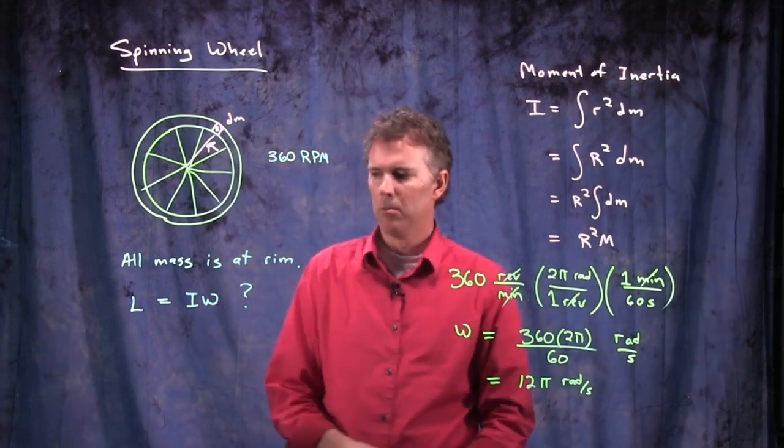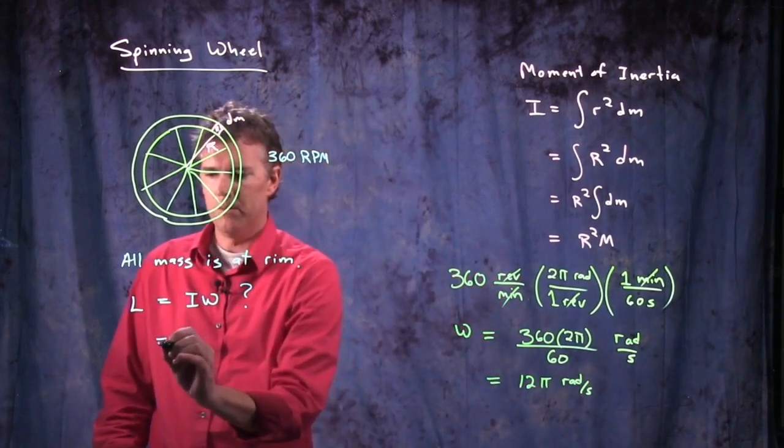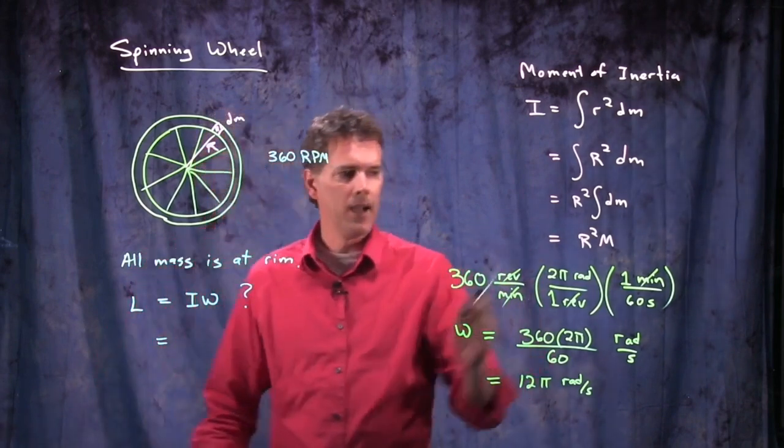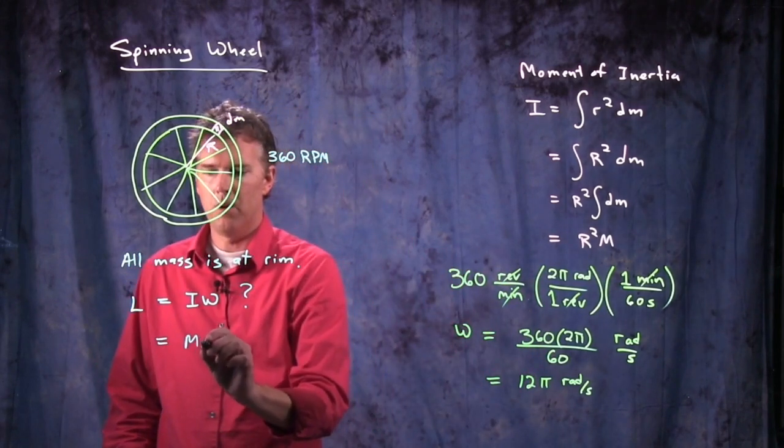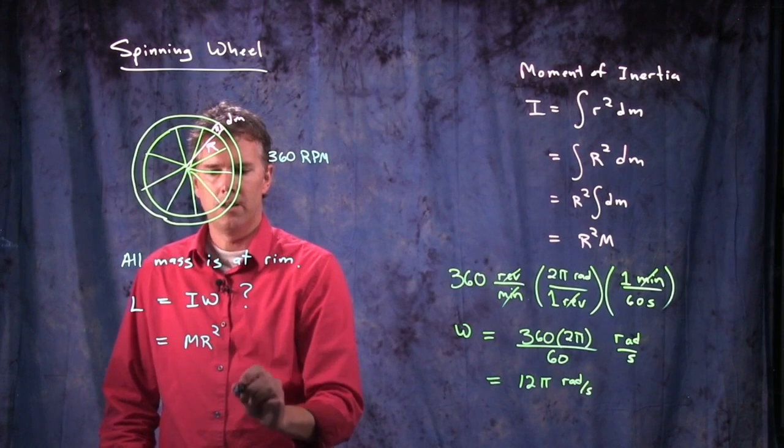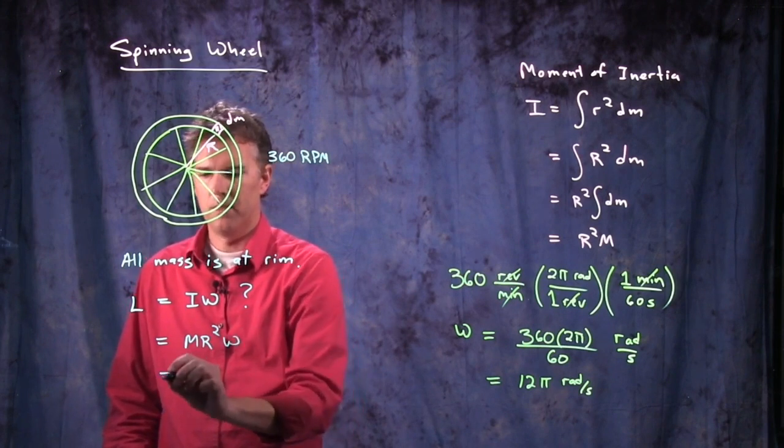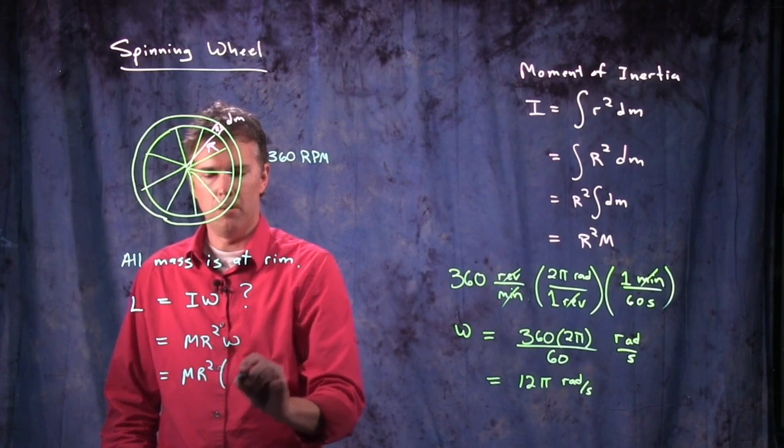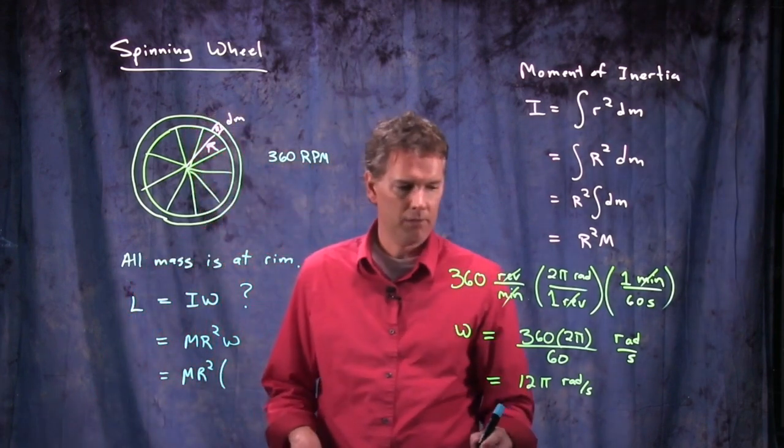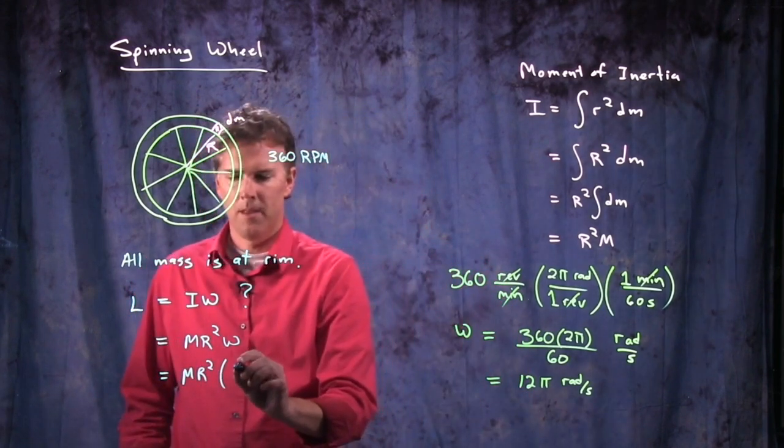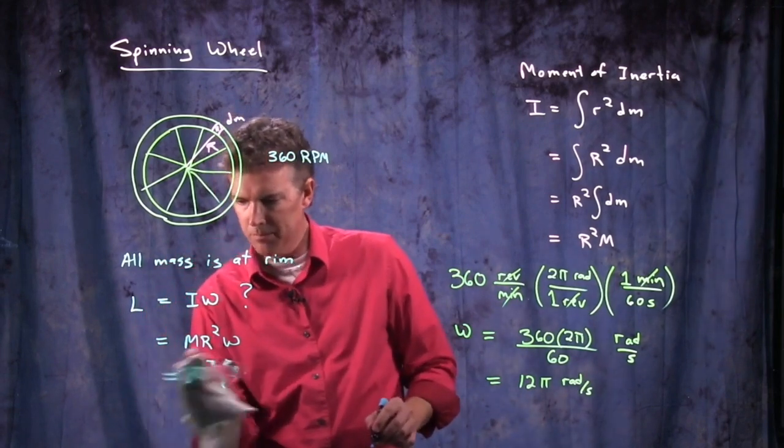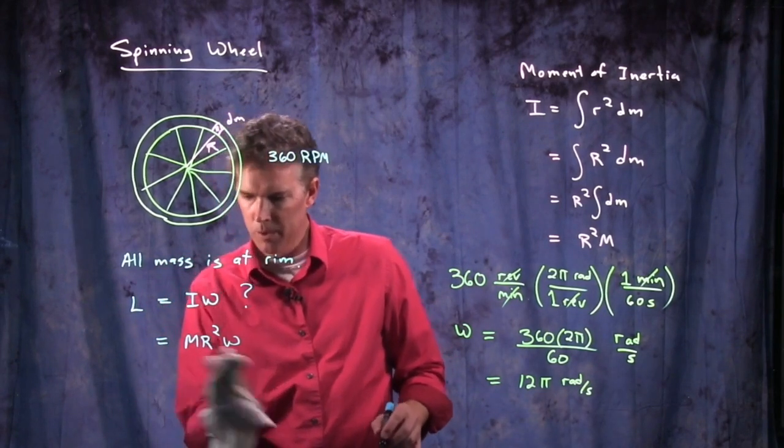All right, so now let's calculate the angular momentum. Angular momentum is I, which is m r squared times omega. m r squared and omega we said was this, 12 pi. And actually, let's back up a step. Let's put in some values for a wheel.